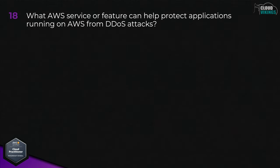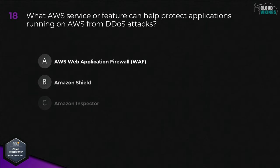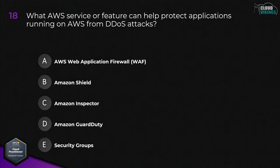Question eighteen: what AWS service or feature can help protect applications running on AWS from DDoS attacks? Options are: A, AWS Web Application Firewall or WAF; B, Amazon Shield; C, Amazon Inspector; D, Amazon GuardDuty; or E, security groups. The correct answer is B, Amazon Shield.